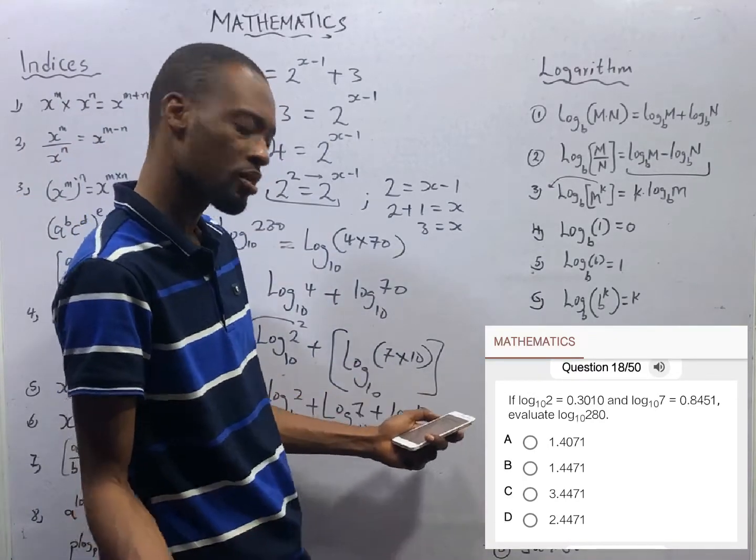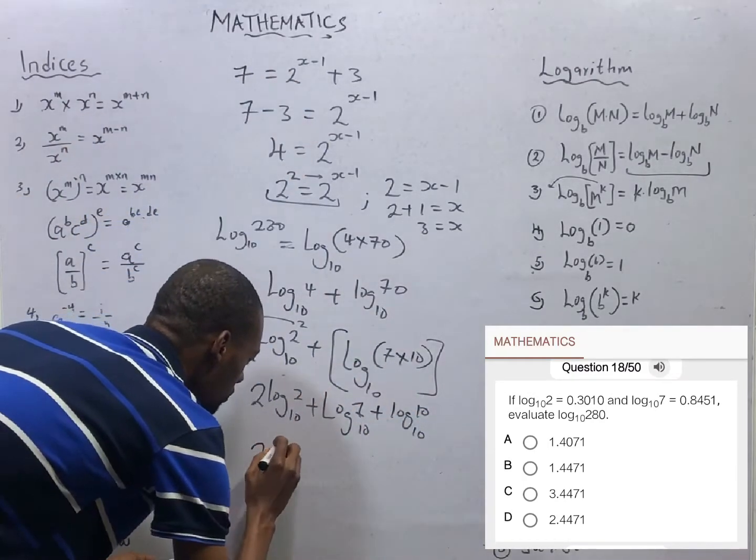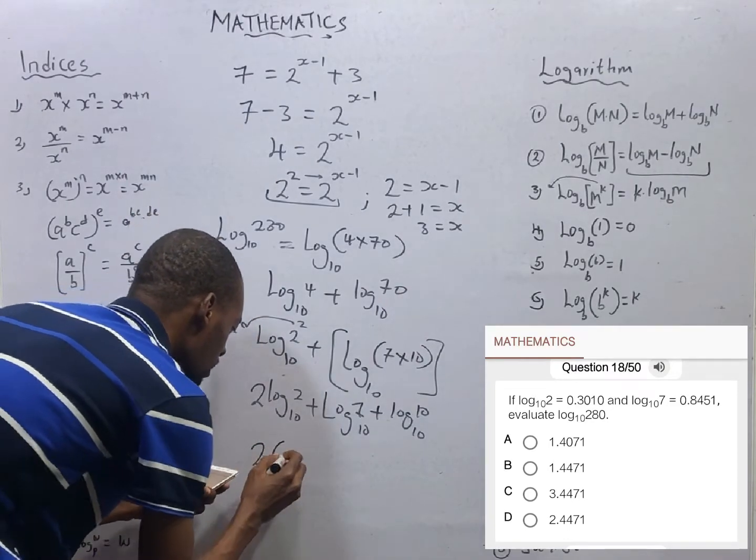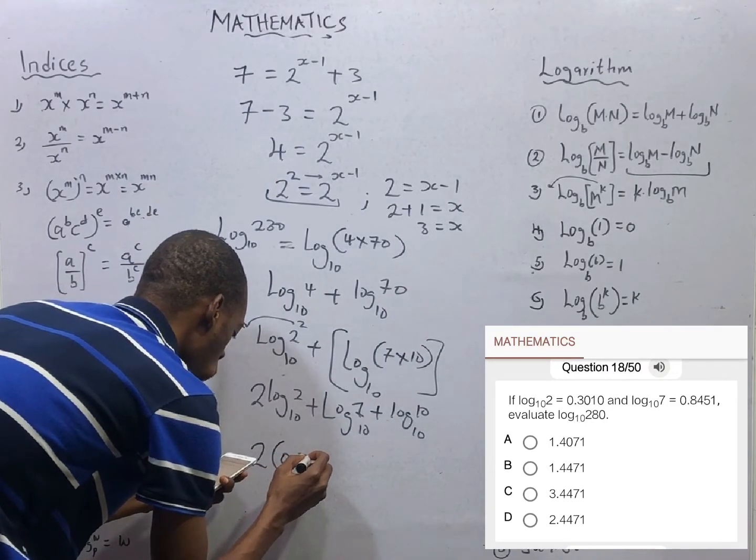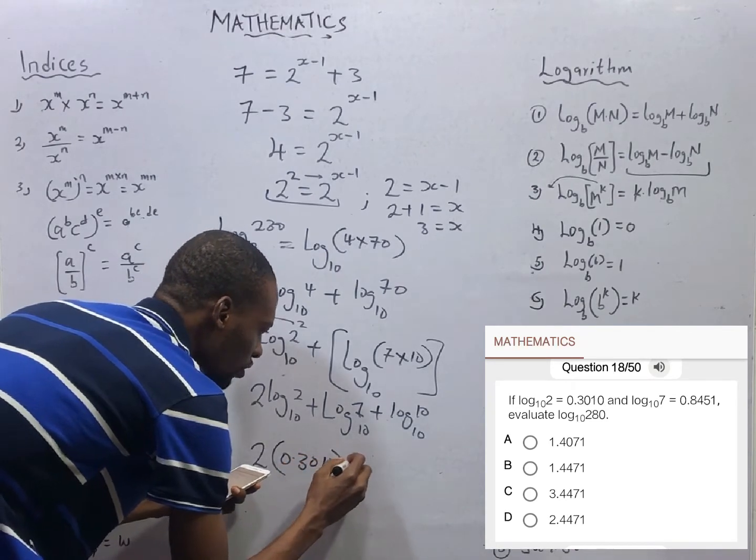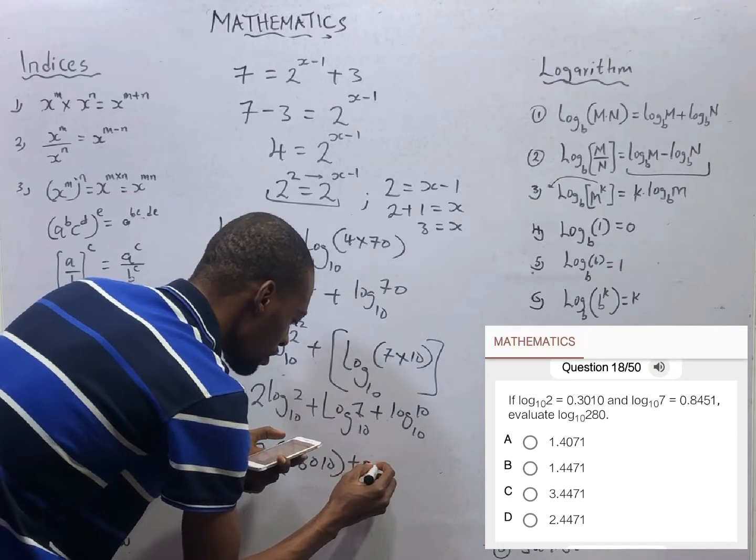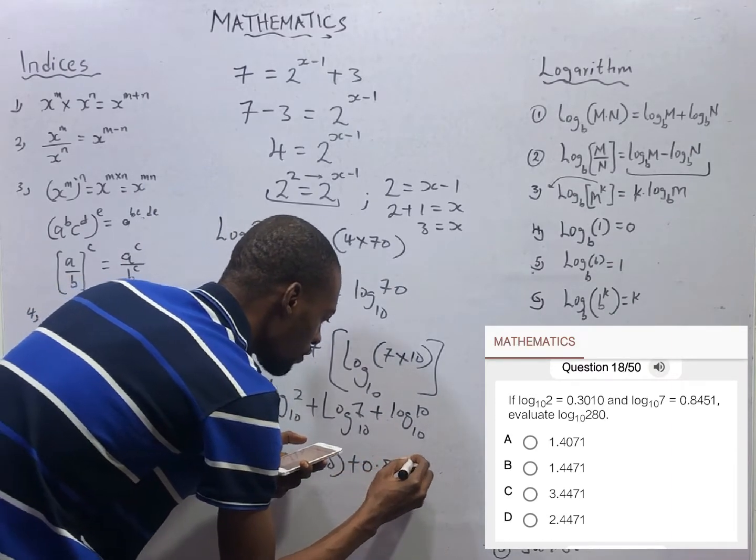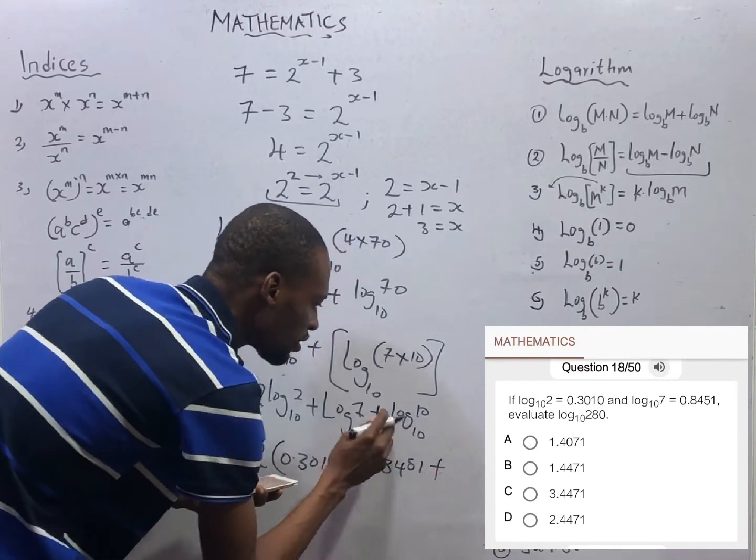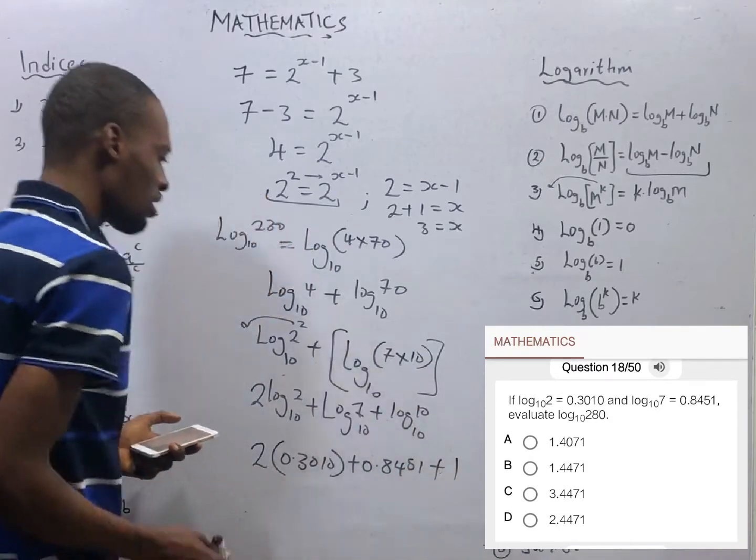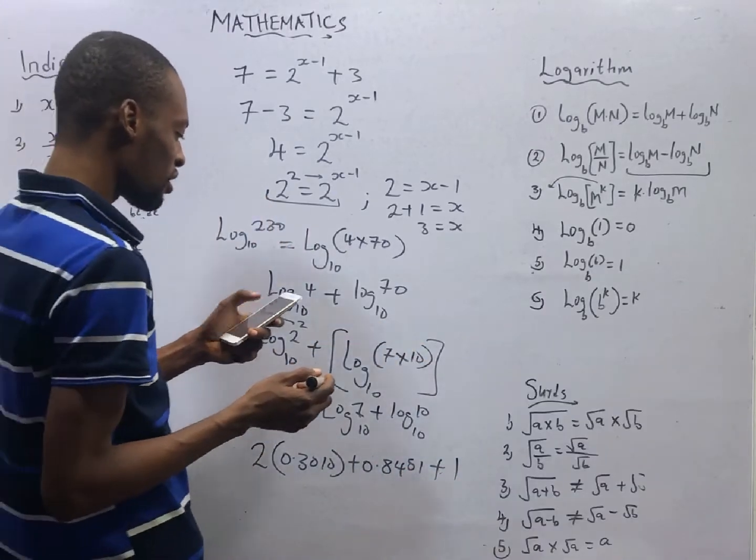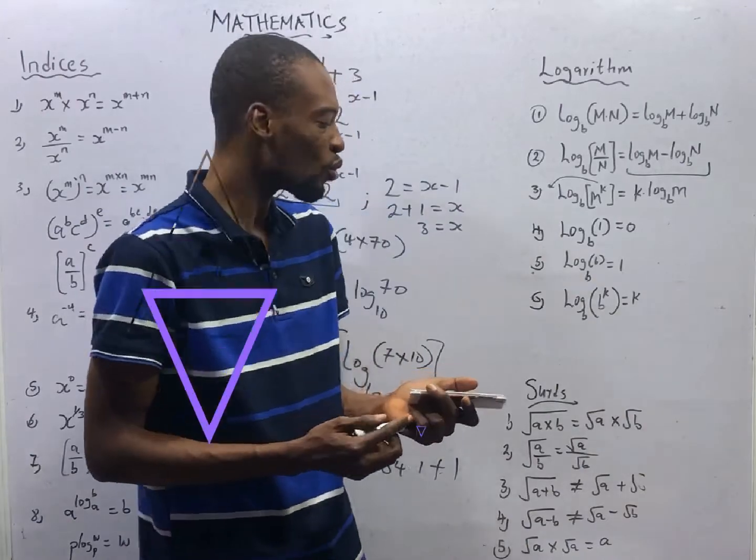We simply substitute to have 2 times log 2 to base 10, they said 0.3010, plus log 7 to base 10, they said 0.8451, then plus log 10 with base 10 is 1. So if you do this operation, you should be able to arrive at 2.4471.